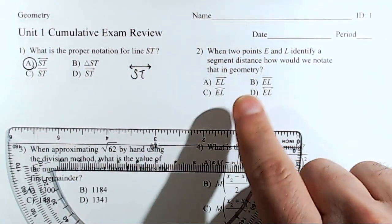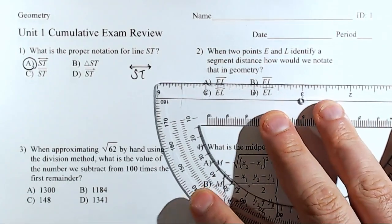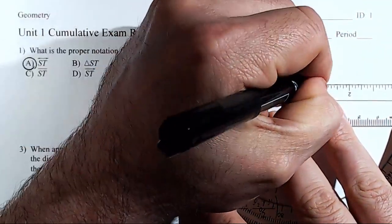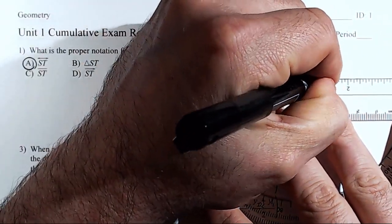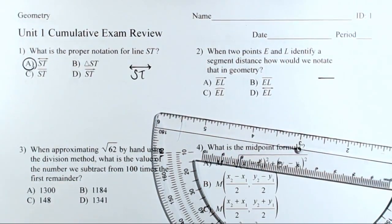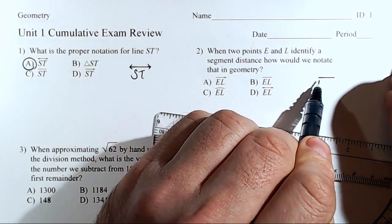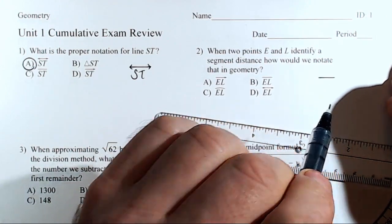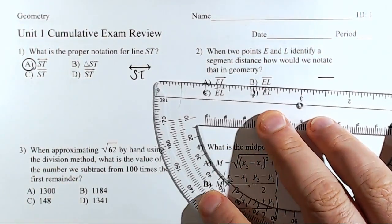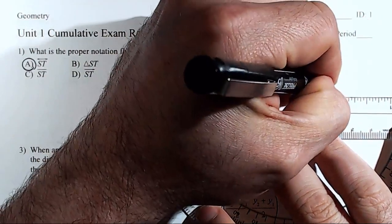Number two asks about a segment. When two points E and L identify a segment distance, how would we notate that? It's just like a line with no arrowheads, and then E, L underneath.